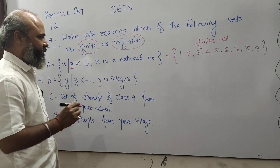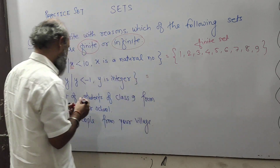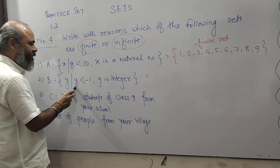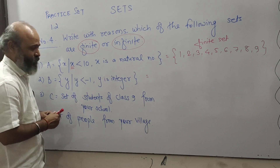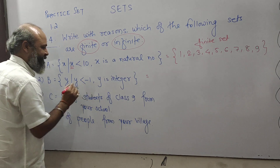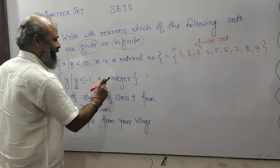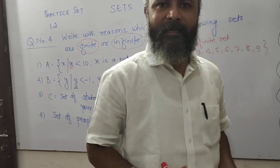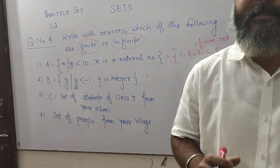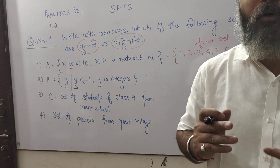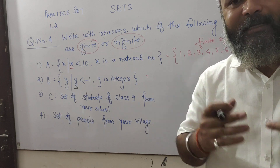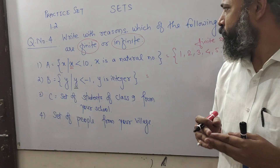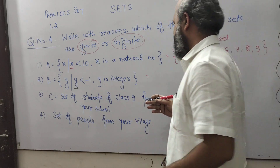Second one: B is the set of all Y such that Y is less than minus 1 and Y is an integer. So less than minus 1 gives us minus 2, minus 3, minus 4, minus 5 and so on. There are infinitely many numbers.